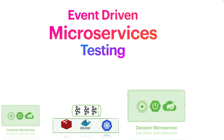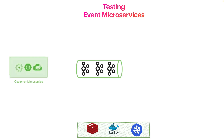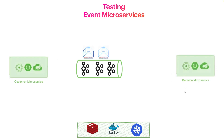Hey guys, welcome back to our series of event-driven microservices using Spring Cloud Stream and Apache Kafka. In the previous videos, we created some microservices which communicate with messages. We have Apache Kafka as our streaming or messaging middleware system, and our customer microservice is publishing some messages to an Apache Kafka topic. On the other side, we have our decision microservice which consumes from the Apache Kafka topic.